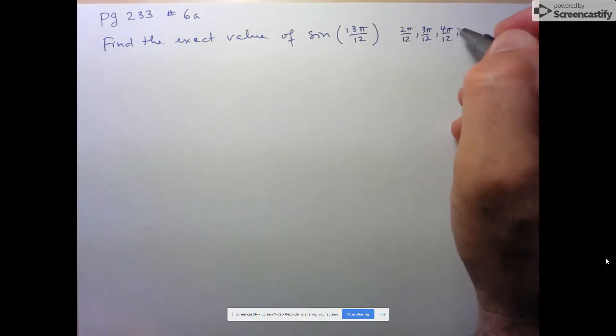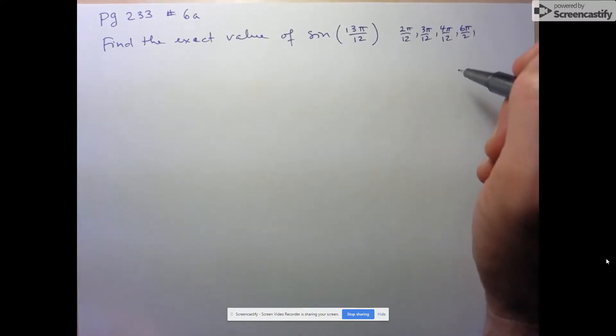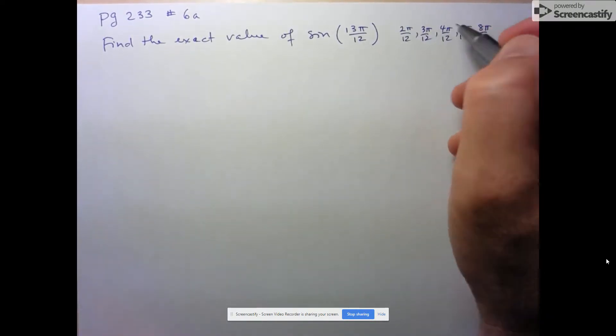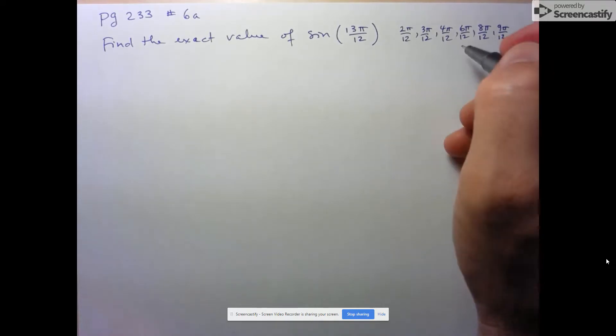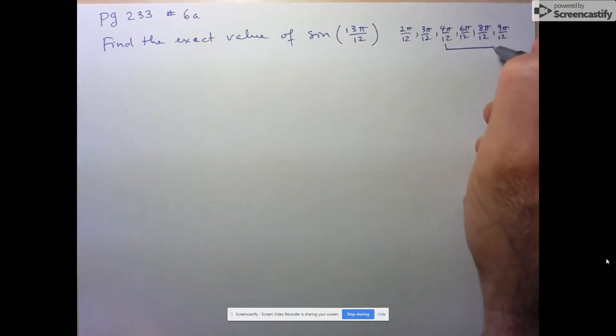We can do 6π over 12, which is π over 2. I don't think that's going to help. We can do 8π over 12, which is 2π over 3. Again, no combination is going to be 13. But once I go to 9π over 12, which is 3π over 4, I see that 9 and 4 give me 13. So that would work.